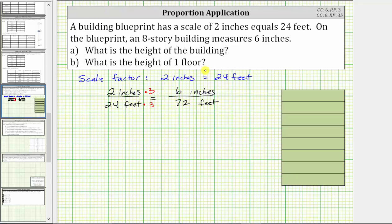So if the measurement on the blueprint is six inches, then the actual height is 72 feet, which is the height of the eight story building. So for part A, the height of the eight story building is 72 feet.